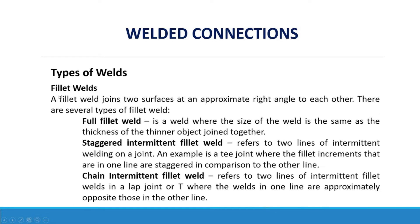Types of Welds. Fillet welds join two surfaces at an appropriate right angle to each other. There are several types of fillet weld. A full fillet weld is one where the size of the weld is the same as the thickness of the thinner object joined together. A staggered intermittent fillet weld refers to two lines of intermittent welding on a joint — for example, a T-joint where the fillet increments in one line are staggered in comparison to the other line.